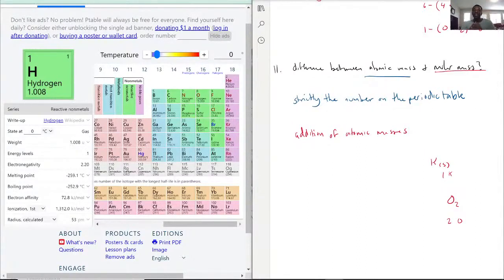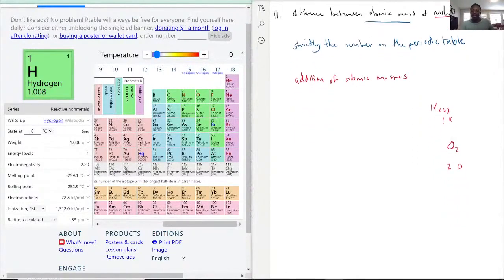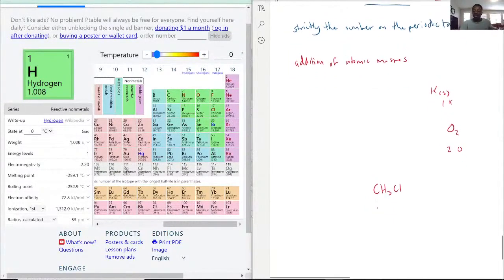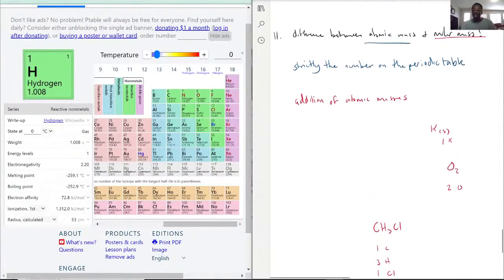And with that being said, you should never see something like what is the atomic mass of CH3Cl. This cannot have an atomic mass because it's composed of different elements. There is no CH3Cl on the periodic table. What it should be asking for is a molar mass because that allows us to add up our atomic masses to get the answer. So the molar mass of this, for example, would be 1C plus 3 hydrogen plus 1Cl. Adding those atomic masses is what gives us our molar mass. So that is the difference between molar mass and atomic mass.